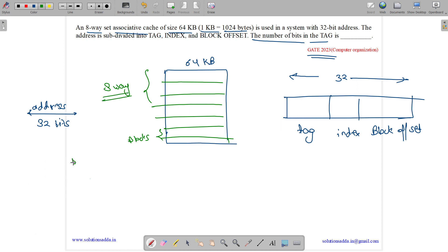Let us assume block offset to be of X bits. So what is the block size then? It is 2 to the power X bytes.